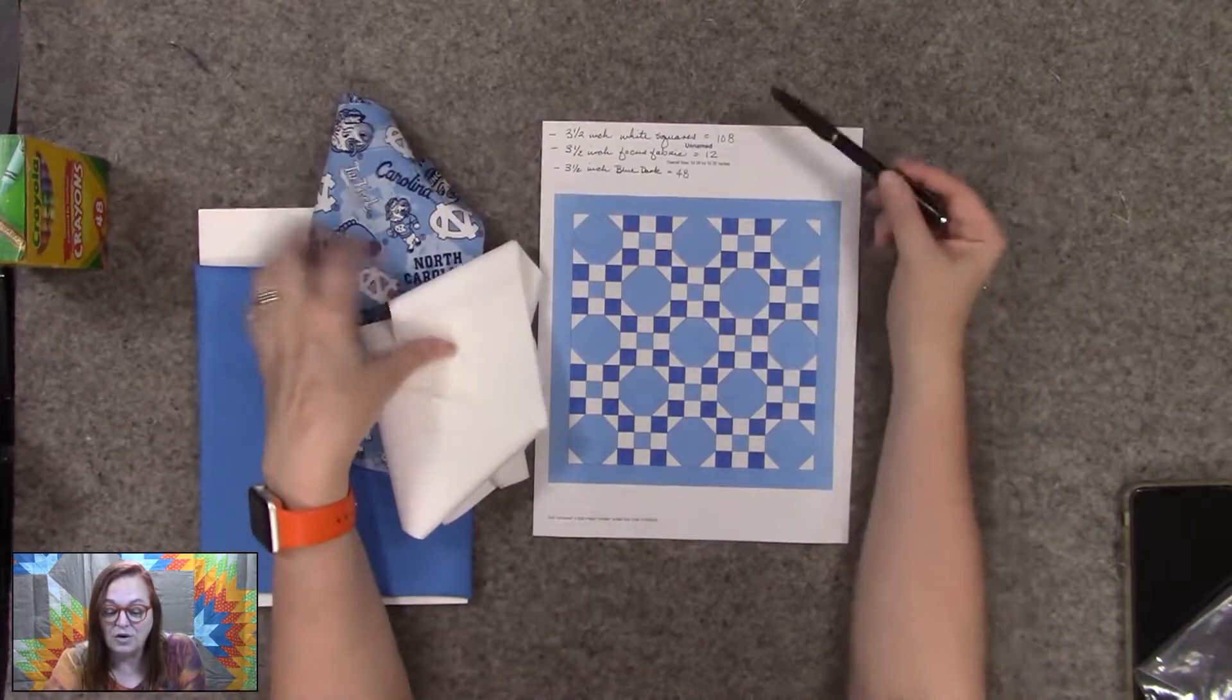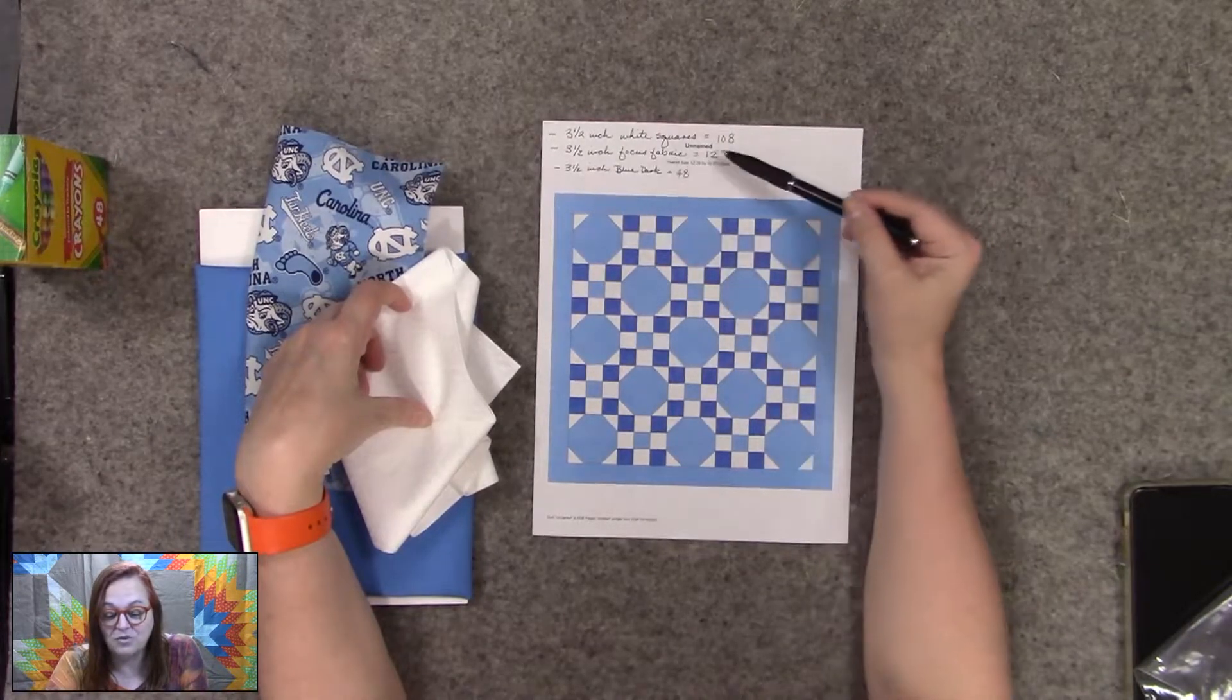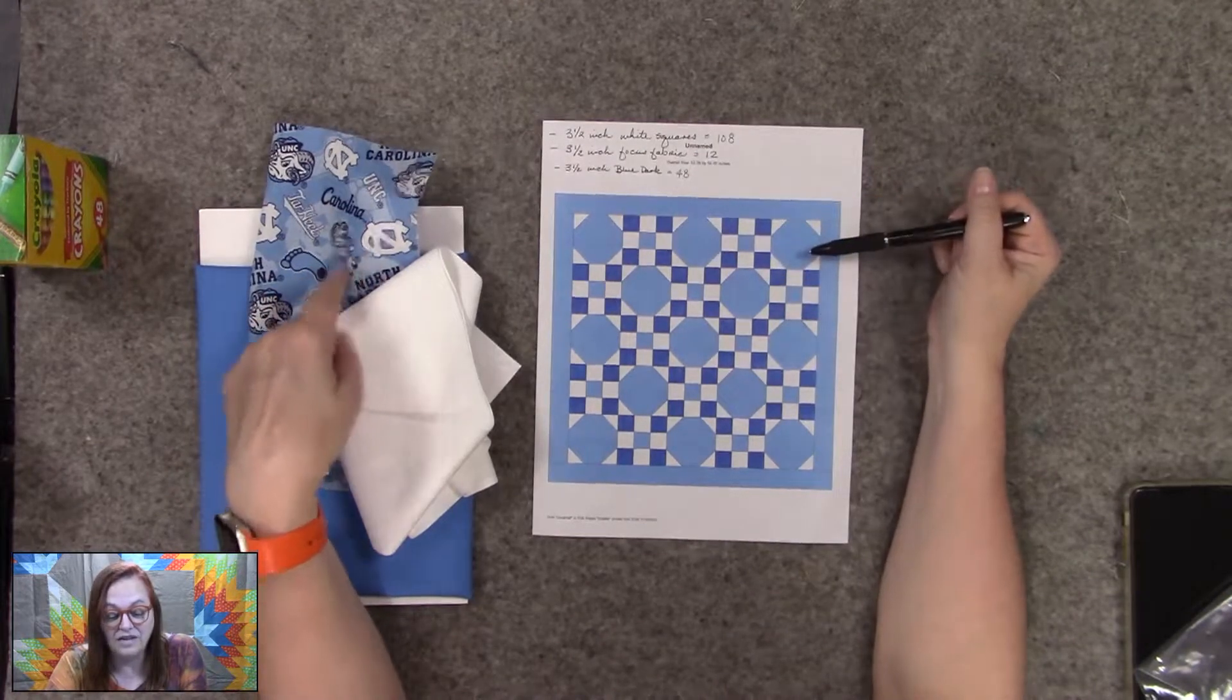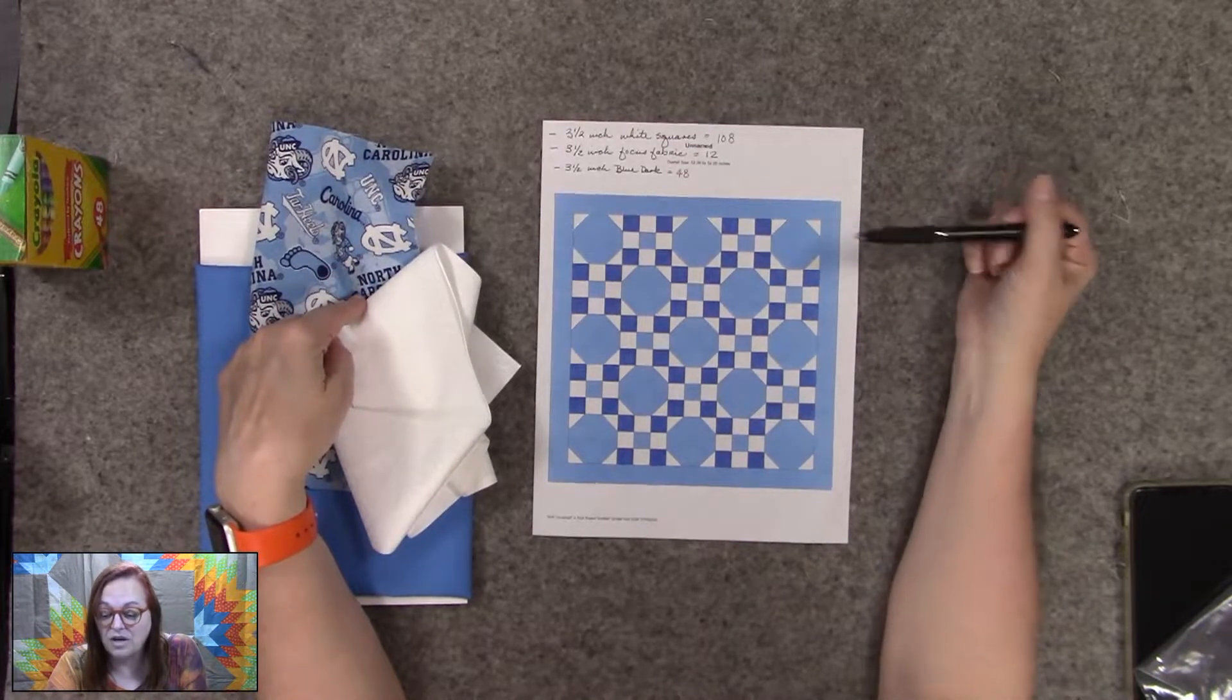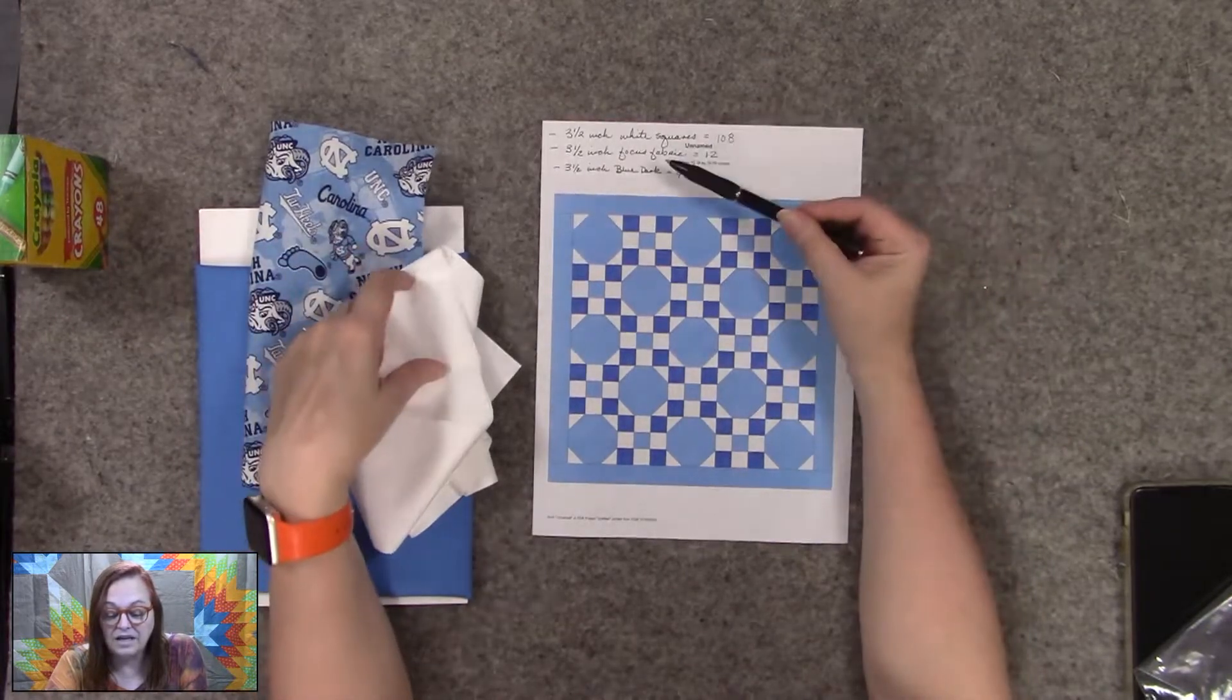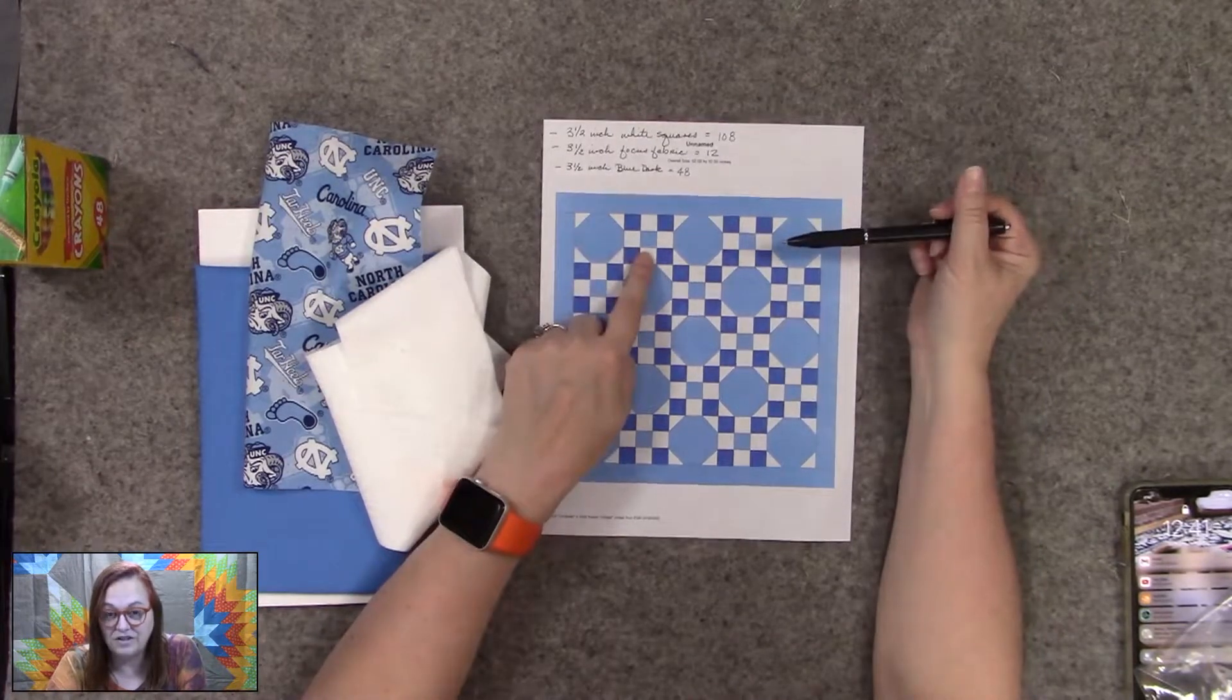You're going to cut three and a half inch, 108 squares of white, three and a half inch squares of your focus fabric which is going to be 12 of those, and then you'll cut 13 nine and a half inch for your background. Then you'll cut also the three and a half inch borders. The borders will finish at three, these will finish at nine, and these will finish at nine.